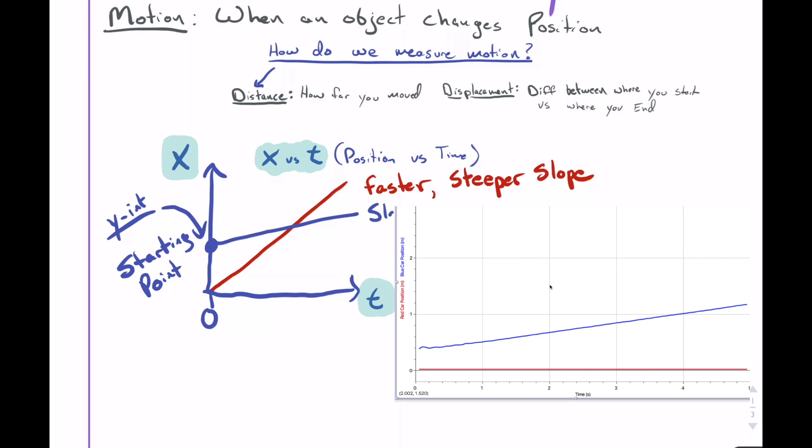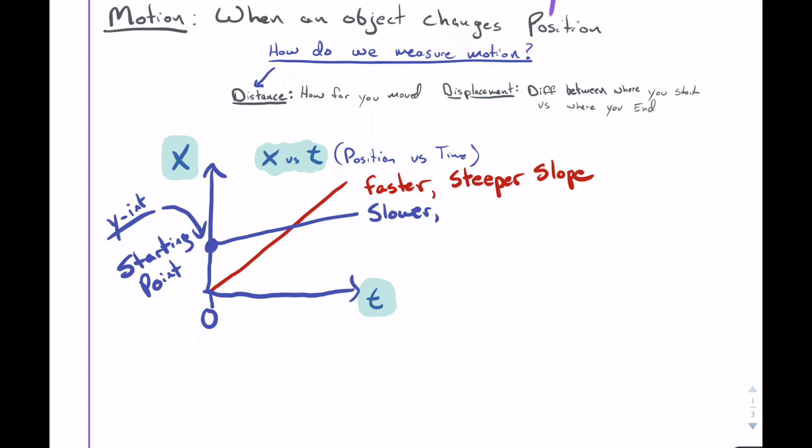The blue car looked a little bit more something like that. What do we know about the blue car? It was slower. What happens here is it gets a flatter or less steep slope.